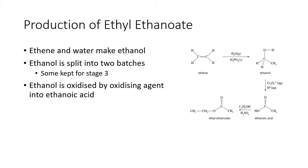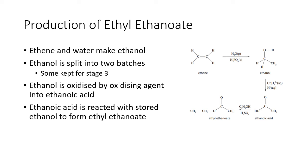Then you use concentrated sulfuric acid and a little bit of heat, along with the ethanol from the first batch, and you react it with the ethanoic acid to turn it into ethyl ethanoate. And that's it — production of ethyl ethanoate. Possibly the most boring video ever.